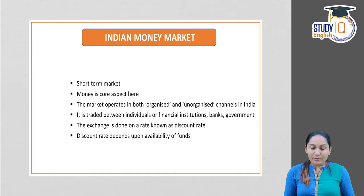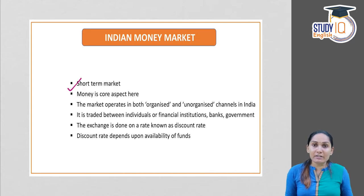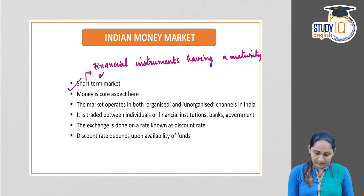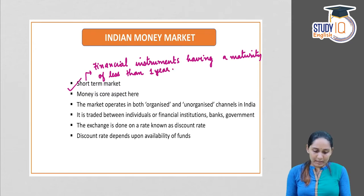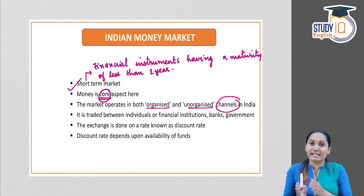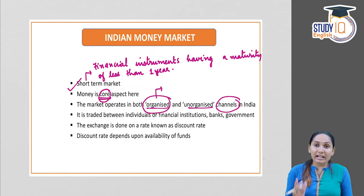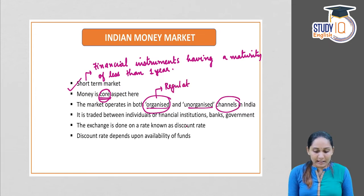Now coming to the Indian money market. Money market instruments have a maturity of less than one year — that's why it's called a short-term market. Money is the core aspect here. The market operates in both organized and unorganized channels. Organized means regulated — within the regulator's purview. Unorganized means unregulated — outside the purview of regulators.